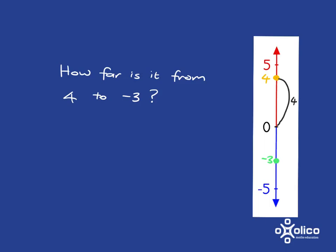0 is 4 steps, and from 0 down to negative 3 is 3 steps. So we've gone 4 steps and 3 steps, and so in total we have gone 7 steps.